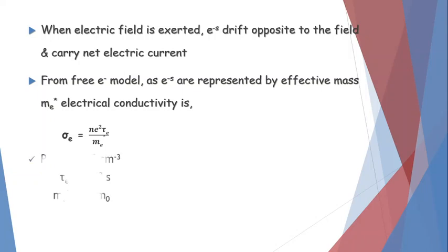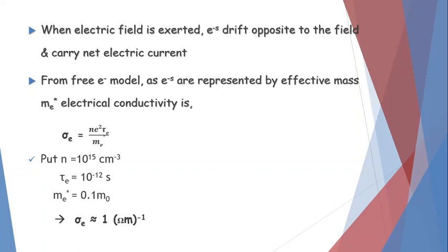If we put in some standard values — N = 10²¹ per meter cube, τ_E = 10⁻¹² seconds, and effective mass = 0.1 times the rest mass of the electron — and substitute into the above equation, we get σ_E approximately equal to 1 per ohm per meter.